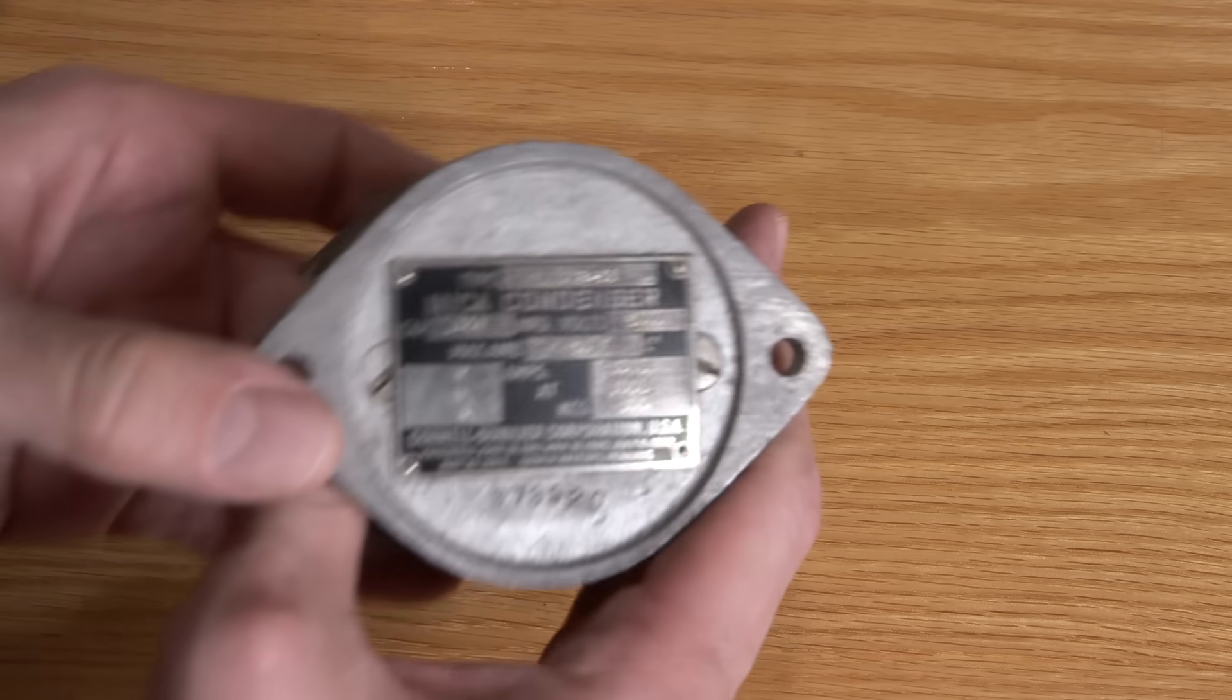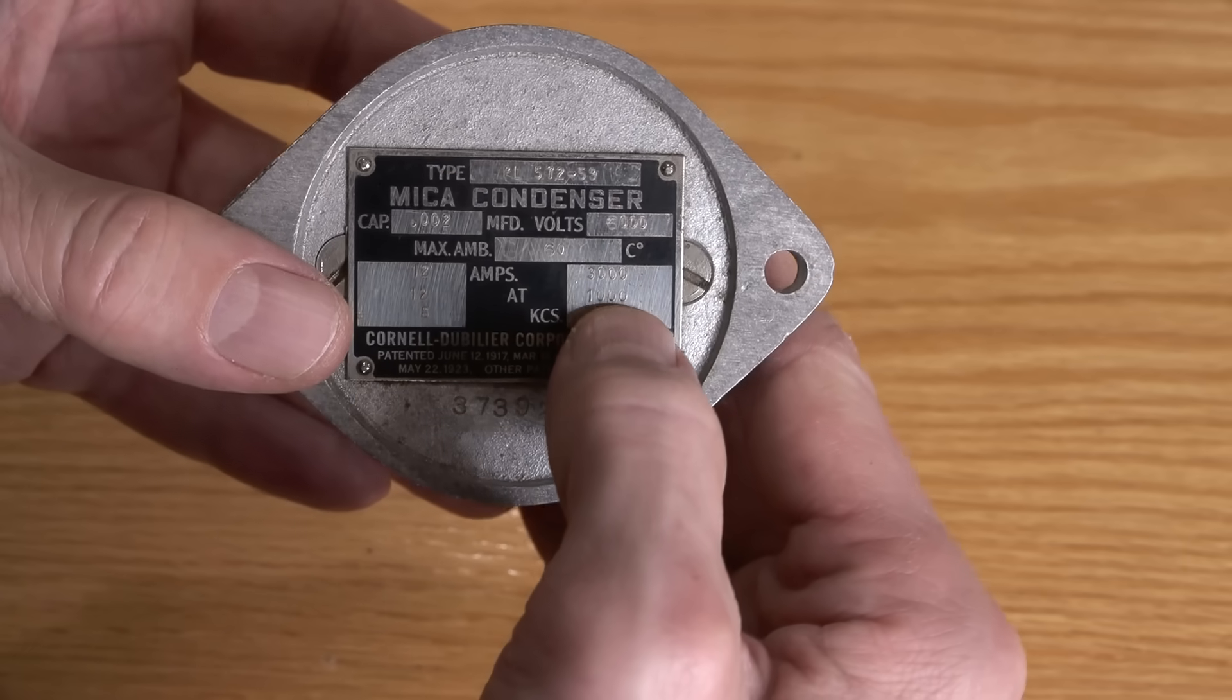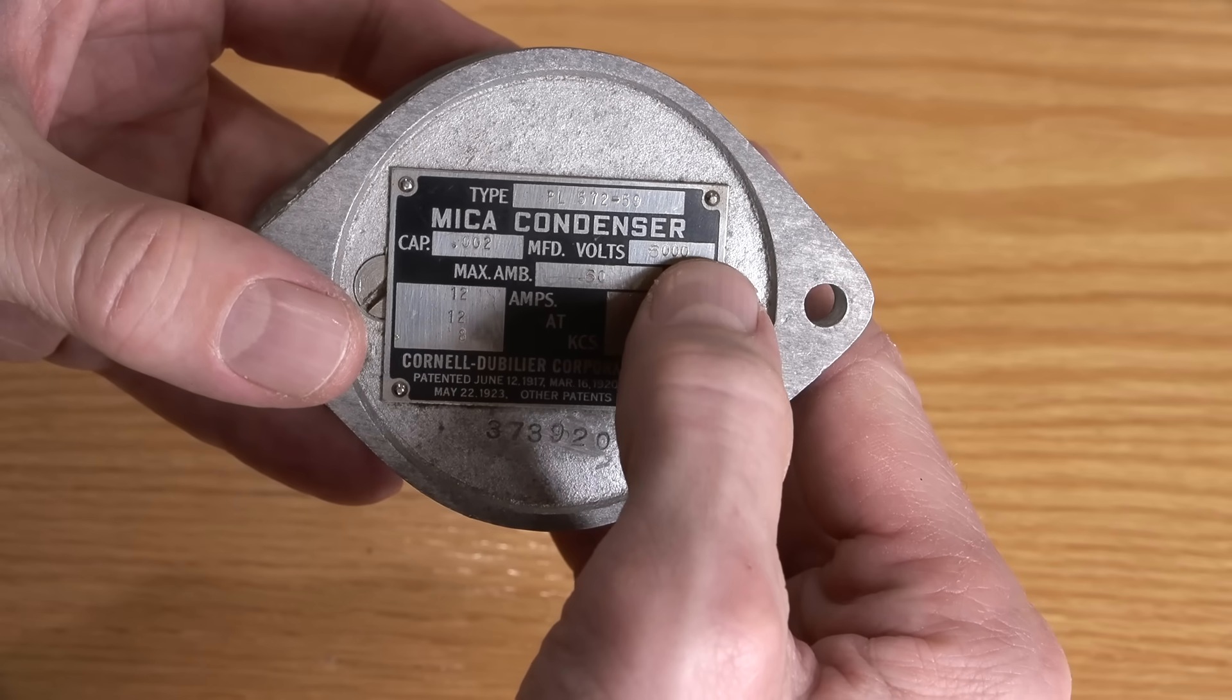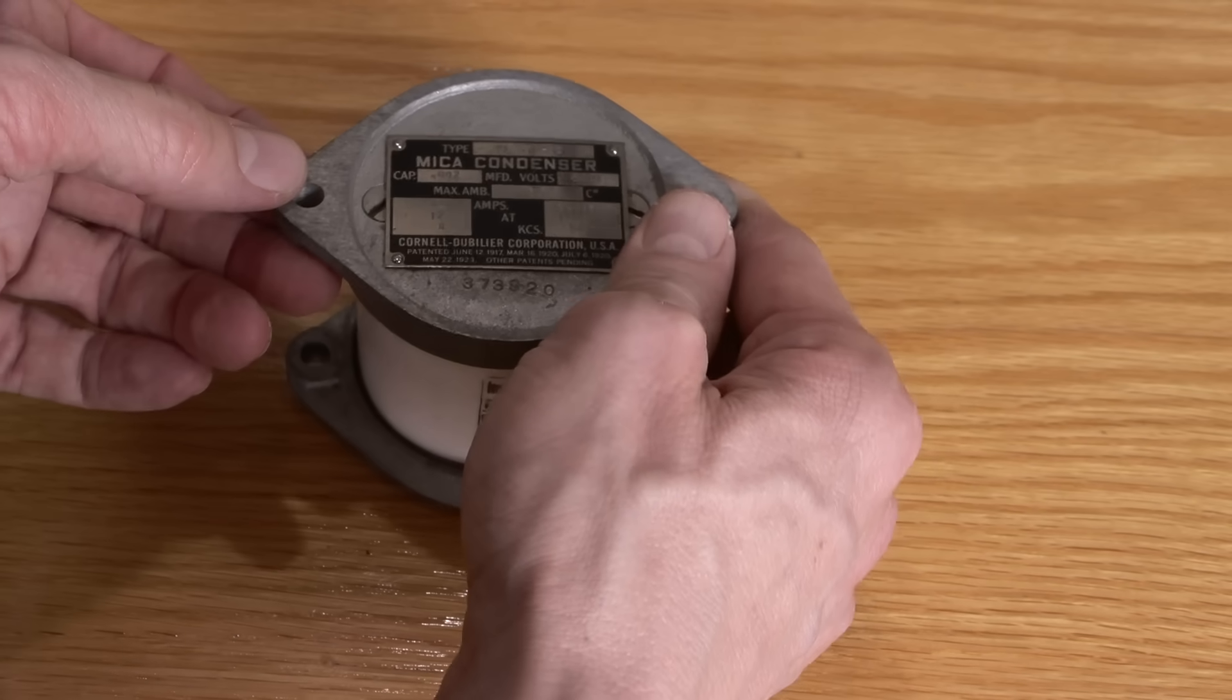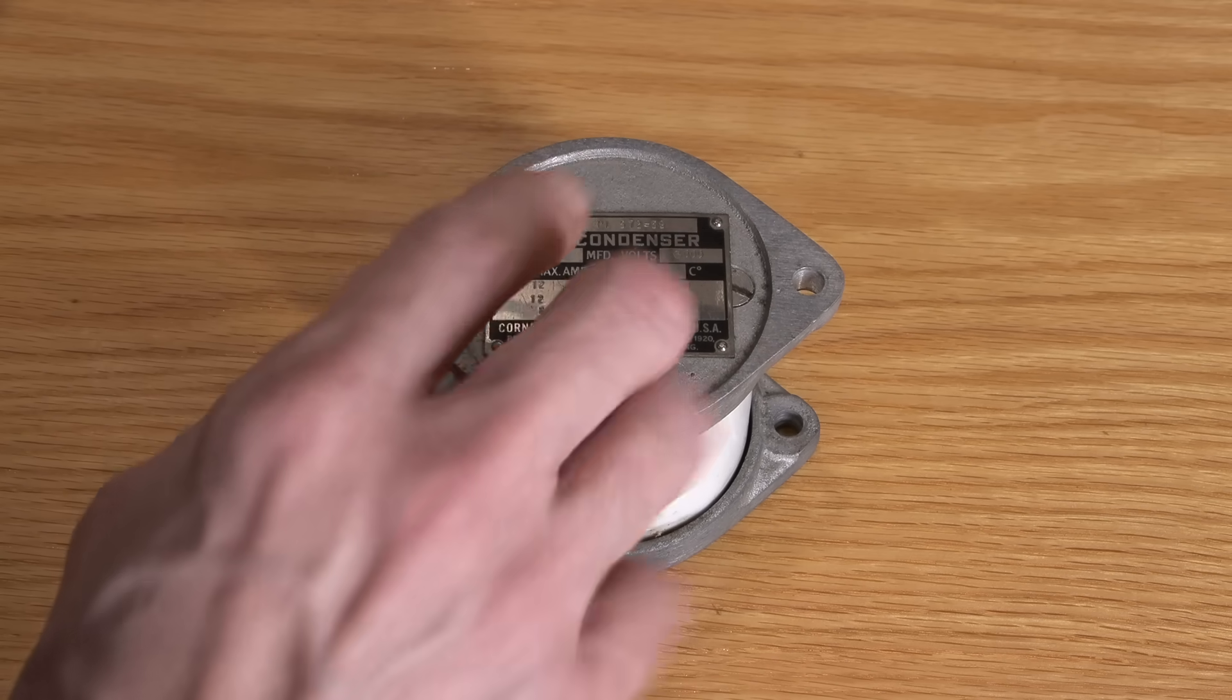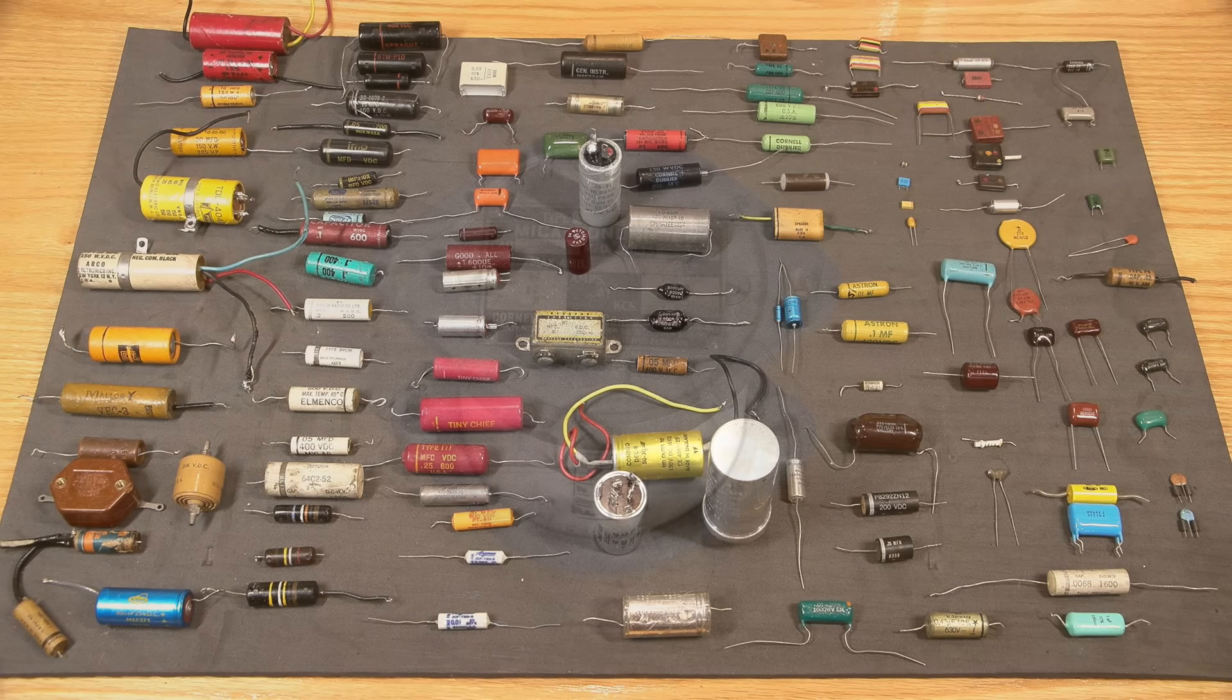This is a big mica capacitor. These are found in broadcast transmitters or any place with relatively large RF. It has some pretty extreme ratings: 12 amps at 3 megahertz, rated at 6 kV, and its capacitance is 0.002 microfarad. Pretty stout capacitor, mostly found in lower frequency service, good as a blocking cap. I have an entire explanation of many different capacitors on Patreon, all those capacitors are explained in detail there.